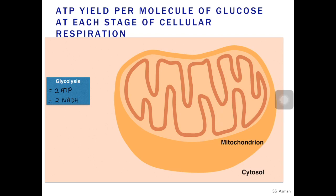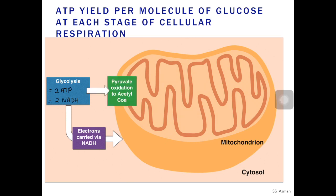These NADH molecules will later on go for oxidative phosphorylation in order to produce ATP molecules. After glycolysis, we have pyruvate oxidation. In this part of cellular respiration, no ATPs are being produced but we do have two molecules of NADH generated.